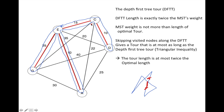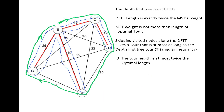Now we want to create from this a legitimate tour that visits every city only once. What we do is follow the depth-first tour, but only move to the next node that is a new node — skipping any revisits. We continue to the next new node and finally return to the beginning. This tour is legitimate because it visits each city exactly once, and it's no longer than the depth-first tree tour because of the triangular inequality.